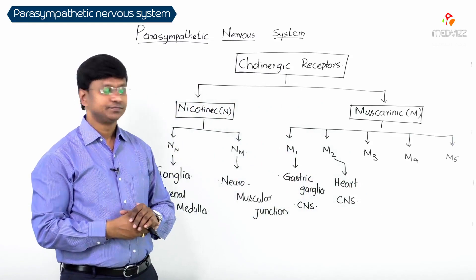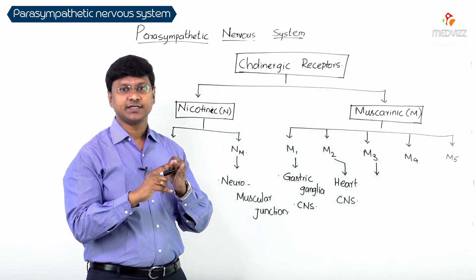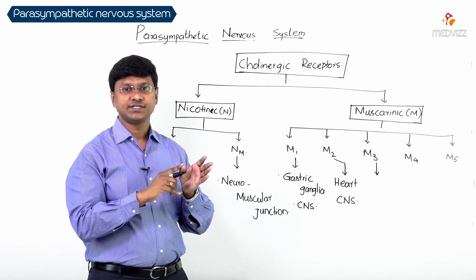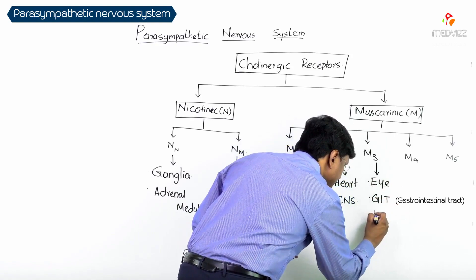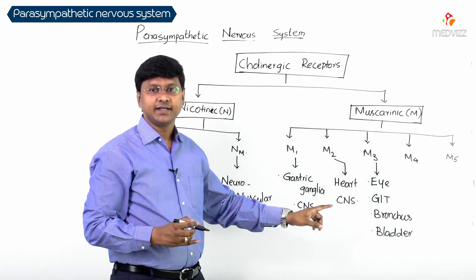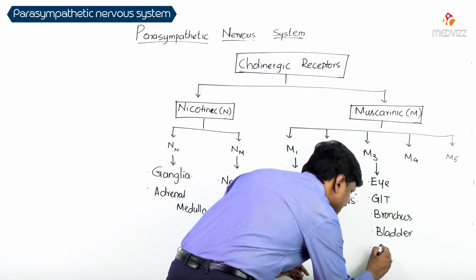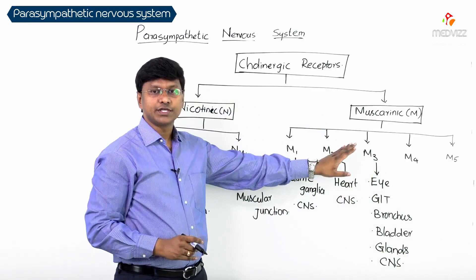M3 receptors are present in the eye, gastrointestinal tract, bronchus, bladder, glands, and also within the central nervous system. So those are all the locations where M3 receptors are found.